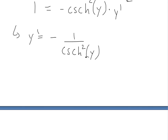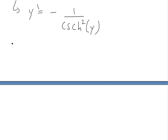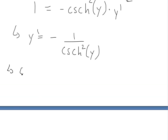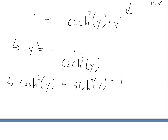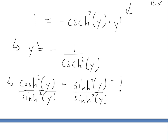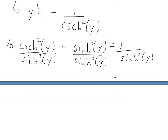Now we want to write this in terms of x by applying a hyperbolic identity shown in an earlier video. We know that hyperbolic cosine squared minus hyperbolic sine squared equals 1. To get hyperbolic cosecant squared of y, we divide everything by hyperbolic sine squared — we're not changing the formula, just dividing by the same thing on both sides.